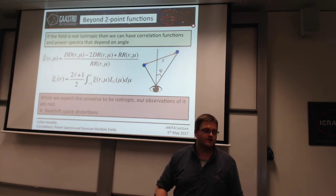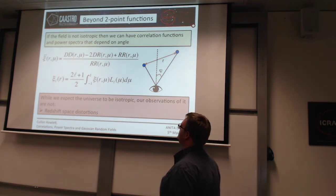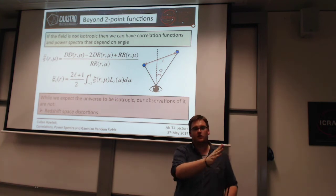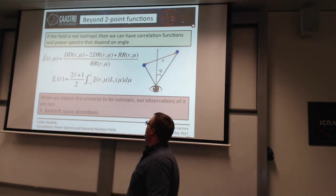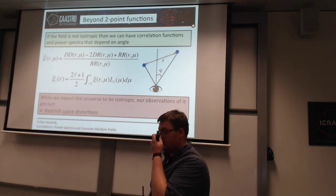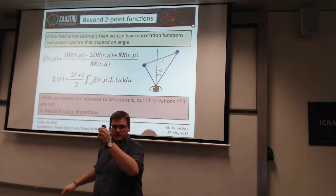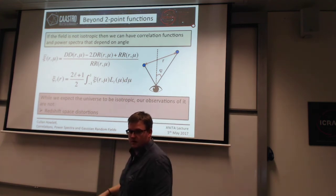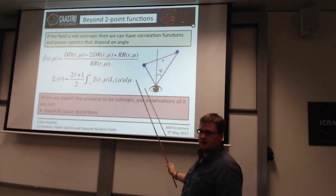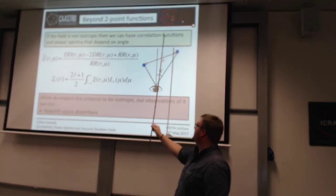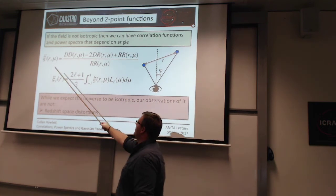Now we can say — what's beyond this? Throughout this talk I've been talking about fields which are isotropic — it doesn't matter which direction you look in — and homogeneous — it doesn't matter where you are. But what if that's not true? What if your universe or your observable is no longer isotropic? Then you can't say your correlation function is just a function of separation between two points. Instead, your correlation function becomes a function of the separation between two points and also the angle at which you're looking at those points, because an observer looking in one direction is no longer the same as an observer looking in another direction.